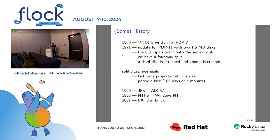A journaling filesystem means that if you crash, you replay the journal — you don't need to check the whole filesystem every time. Another very important development is that people use initrds to boot. With an initrd, you have a subset of the operating system used to mount /usr — the whole operating system — and this three-way duplication stopped making sense.